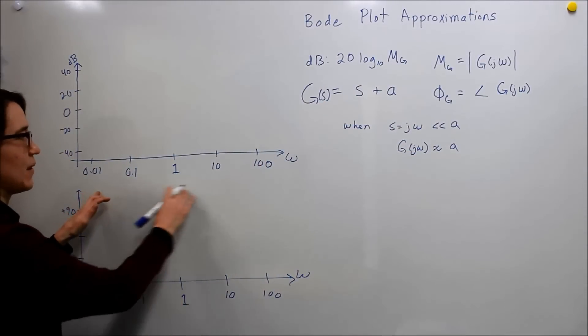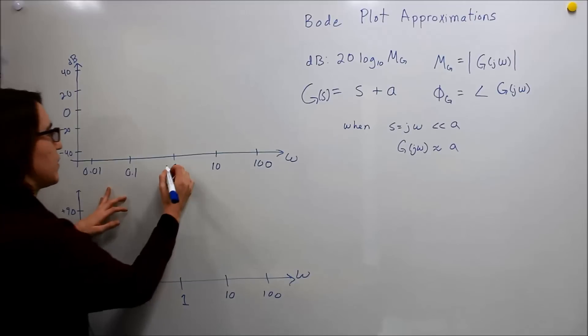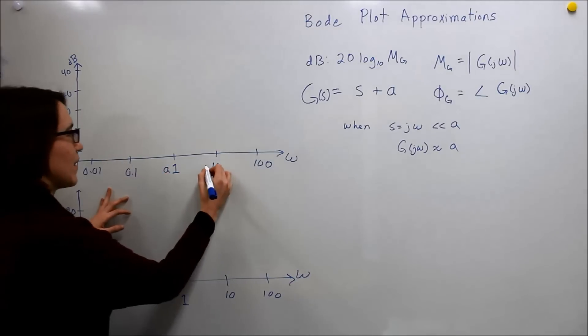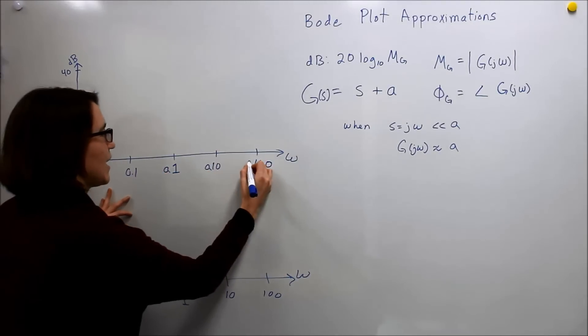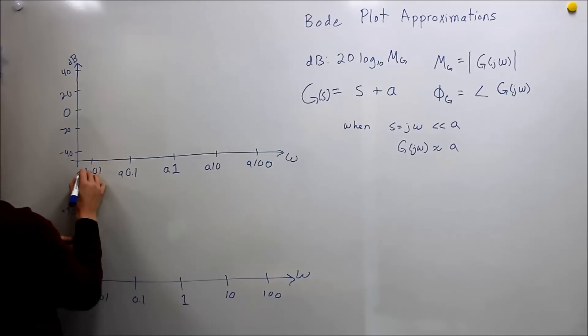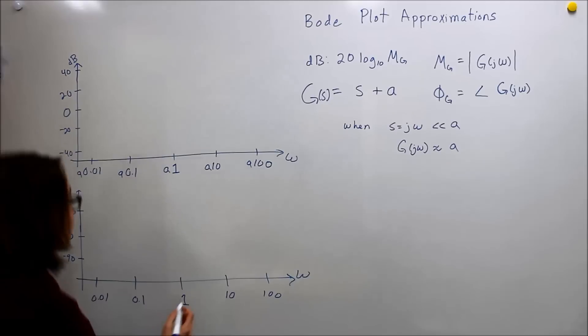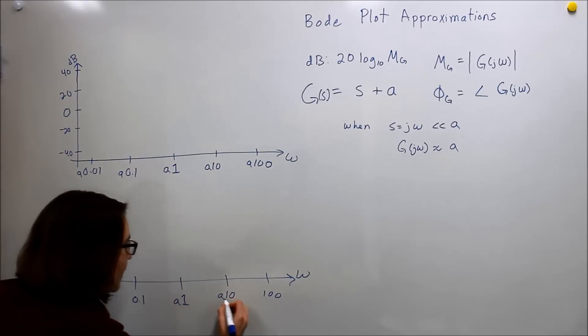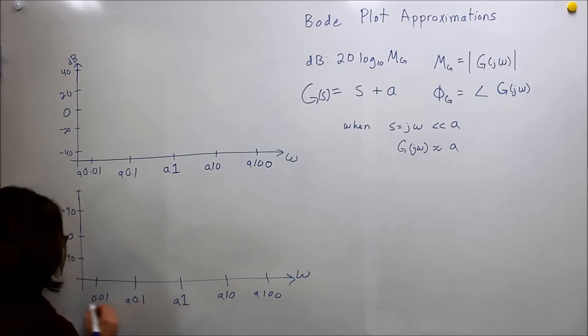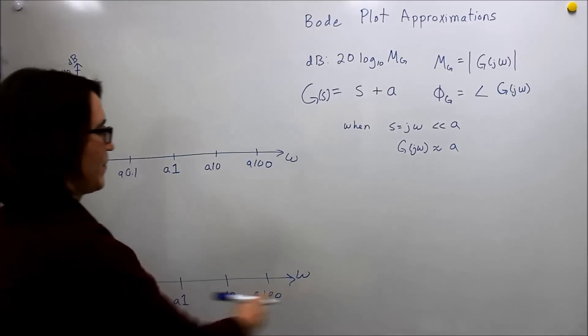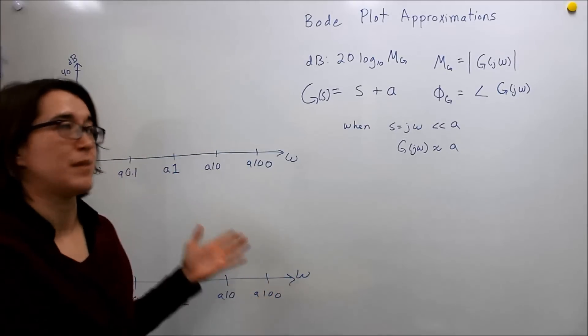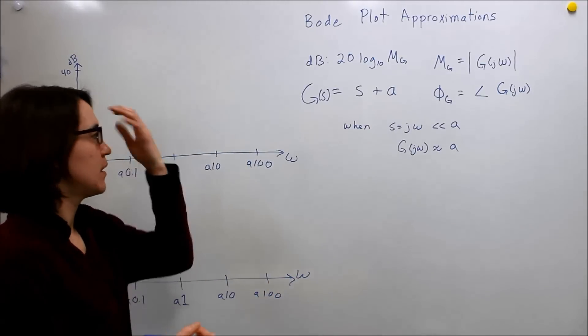We're going to actually change the scale. So instead of being absolute, now we're going to do multiples of a. So a times 0.01, 0.1, 1, 10, 100. These are different multiples of whatever the value of a is, and same here. So we're just scaling our x-axis a little bit differently based on the value of a.